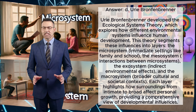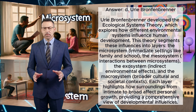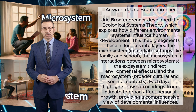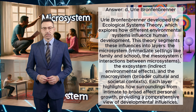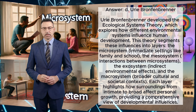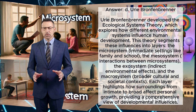This theory segments these influences into layers: the microsystem — immediate settings like family and school; the mesosystem — interactions between microsystems; the exosystem — indirect environmental effects; and the macrosystem — broader cultural and societal contexts. Each layer highlights how surroundings, from intimate to broad, affect personal growth, providing a comprehensive view of developmental influences.